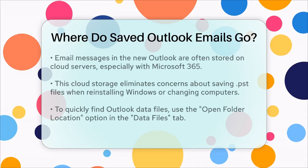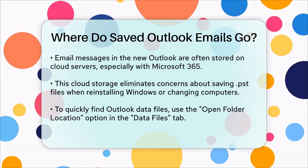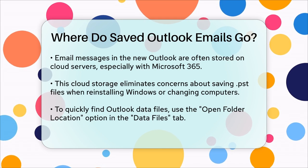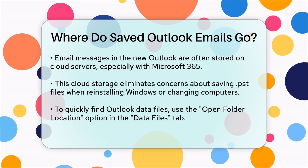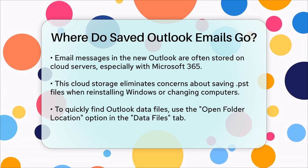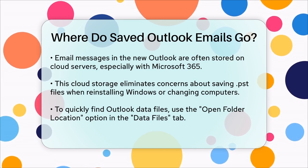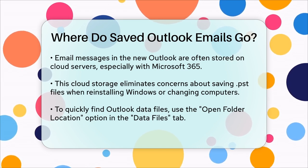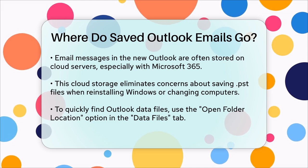To quickly find where your Outlook data files are stored, you can go to the File menu in Outlook, select Account Settings, then Account Settings, and finally click on the Data Files tab. Here you can select an entry and click Open Folder Location to see where your files are stored.